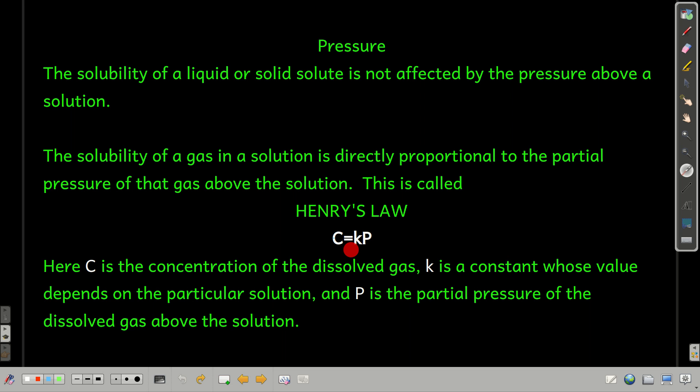This is called Henry's Law. You should memorize it. C equals kP. Here, C is the concentration of the dissolved gas. The units of the concentration, by the way, depend upon this. This is called Henry's Law constant. And you'll find Henry's Law constant in different units. We're going to use moles per liter atmosphere here. And P is the partial pressure of the gas that's in the solution above the solution.